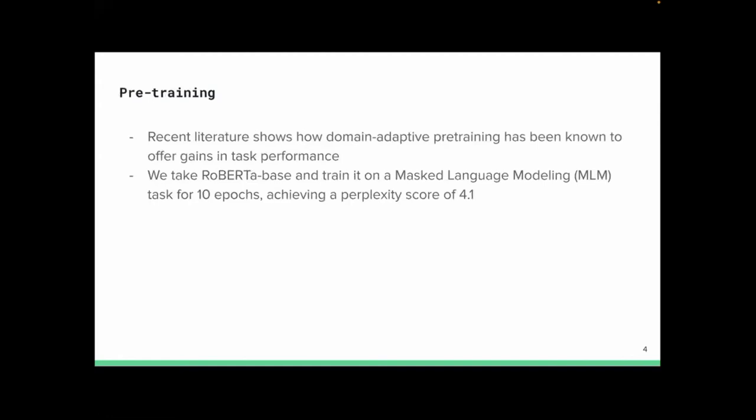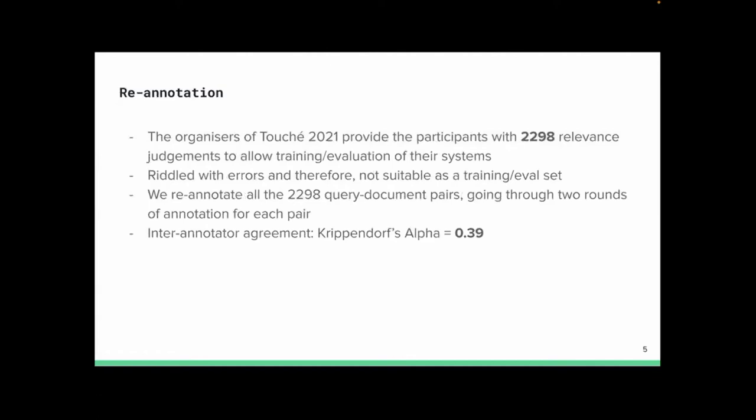For pre-training, we have seen literature on how domain adaptive pre-training has been known to offer gains in task performance, so that's what we follow. Instead of BERT, we take RoBERTa Base — arbitrarily, though you could experiment with BERT Base as well. We do MLM on it for 10 epochs and achieve a perplexity of 4.1. If we had more compute, we could have trained for more epochs, but 10 seemed reasonable. We then take these models for further downstream tasks.